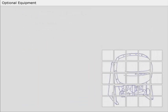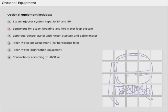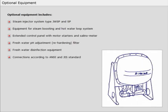Optional equipment includes steam ejector system type JWSP and SP, equipment for steam boosting heating and hot water loop system, extended control panel with motor starters and salinometer, fresh water pH adjustment re-hardening filter, fresh water disinfection equipment, and connections according to ANSI and JIS standard.